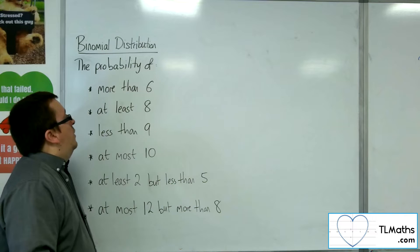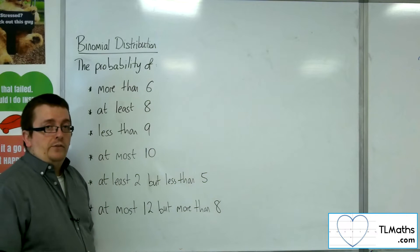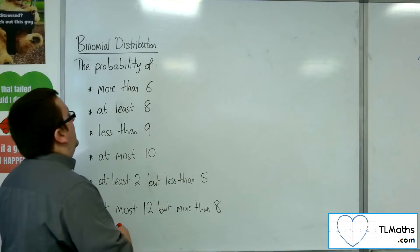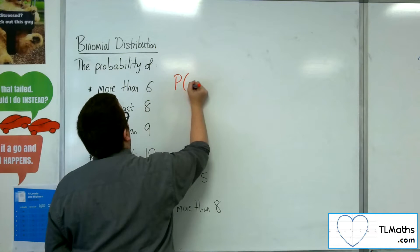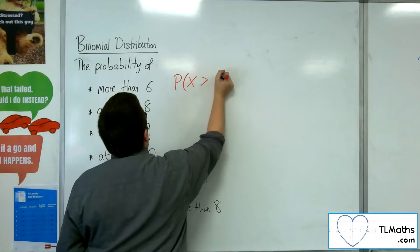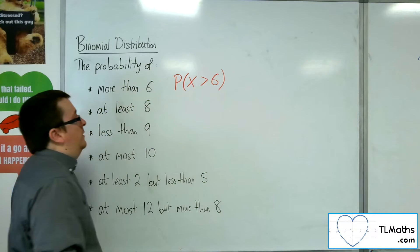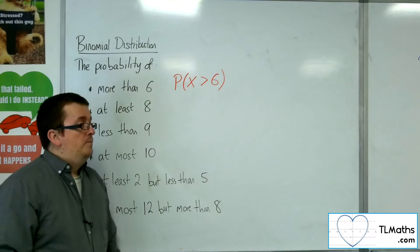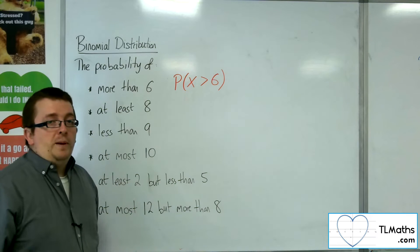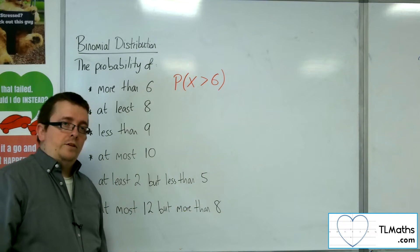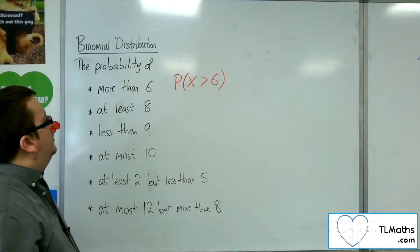So what's the probability of getting more than 6? This is quite an obvious one. We would write that down as the probability of X being more than 6, greater than 6. So I want more than 6 people to attend the party. That's how it could be interpreted.